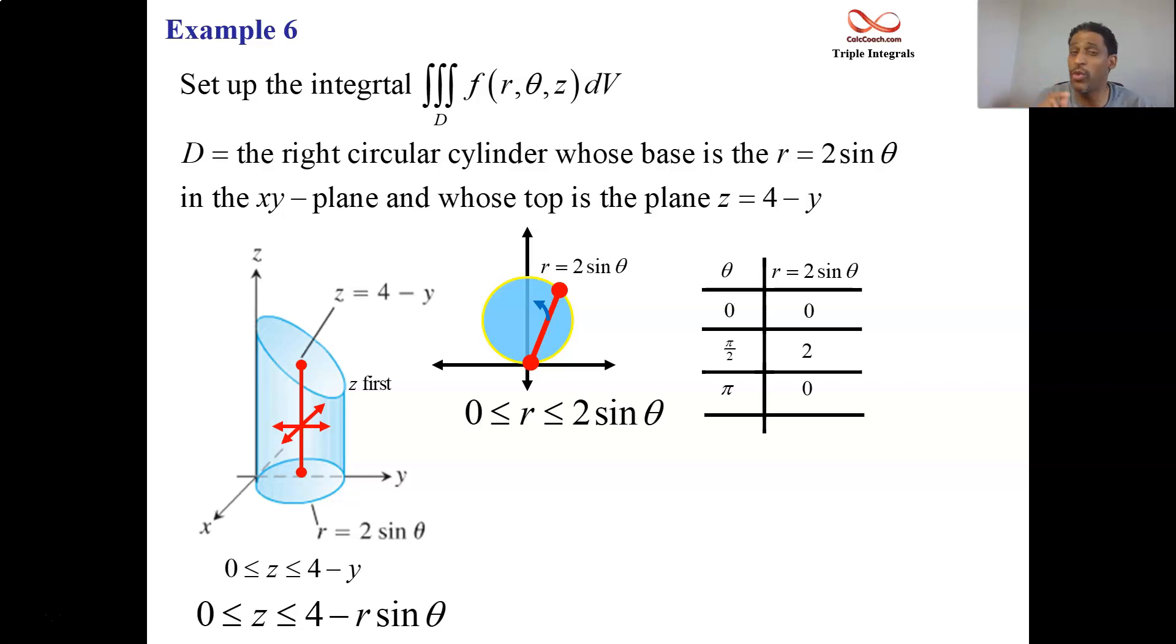Normally, circles go from zero to 2π, but those are the ones that are centered at the origin. Move the center away from the origin, and your circles get traversed faster. They go from zero to π.